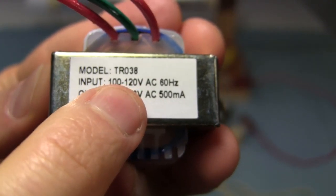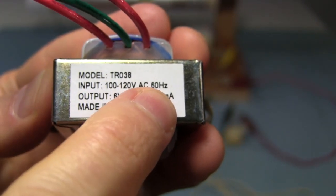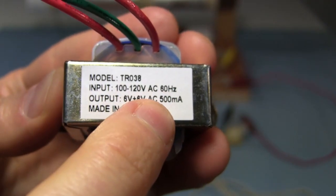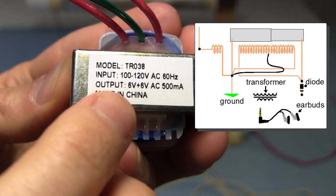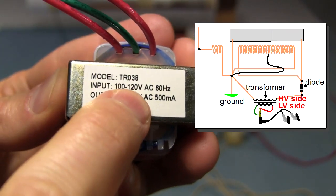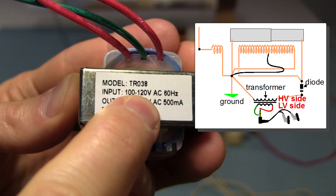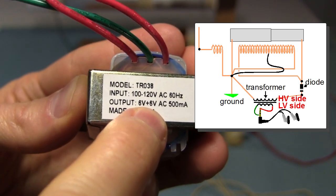This transformer is marked as 100 to 120 volts AC on the input and 6 volts AC to the output. So the high voltage side goes to the crystal radio parts and the low voltage side goes to the earbuds.